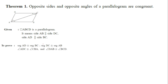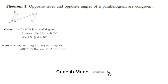Now, to prove: opposite sides and opposite angles of this quadrilateral are congruent. So AD and BC are opposite sides — we have to show these two are congruent. Similarly, DC and AB are also congruent. For opposite angles: angle ADC and its opposite angle ABC are congruent, and another pair, angle DAB and angle BCD, are also congruent.